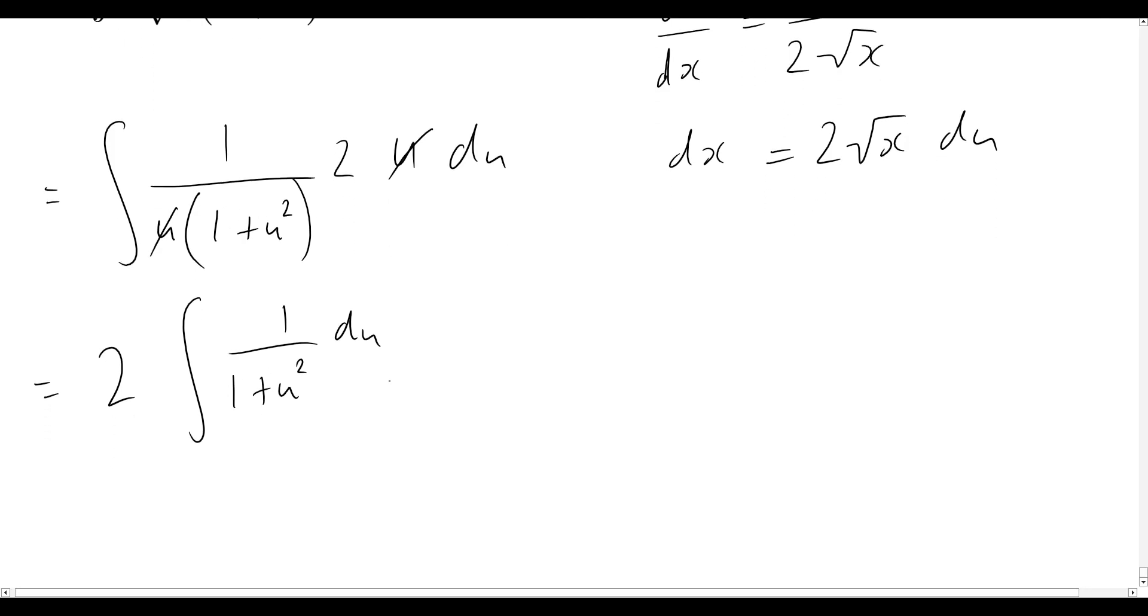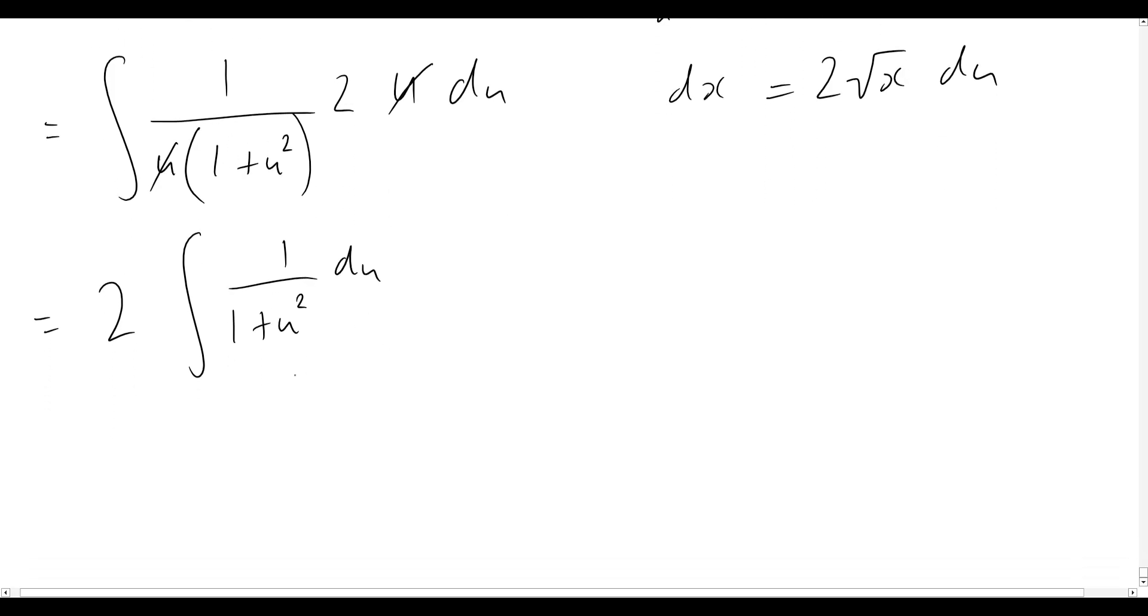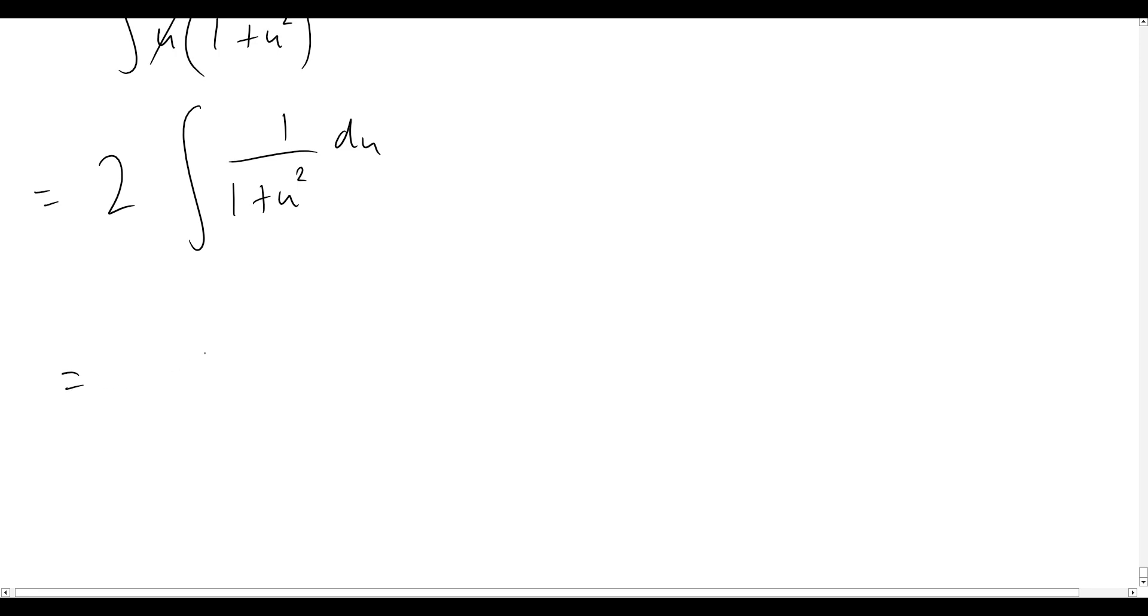Okay, and we should know and recognize this integral here. So this integral is just going to give us the inverse tan function. So now our final answer here will just simply become 2 times tan inverse of u plus some constant c.